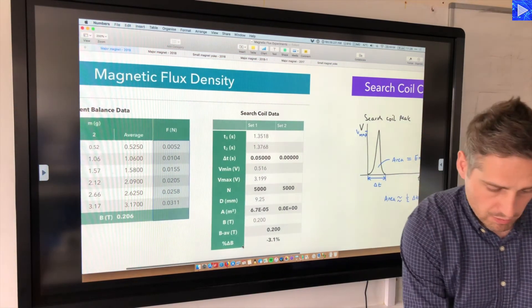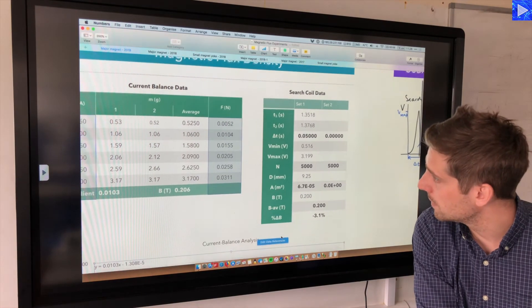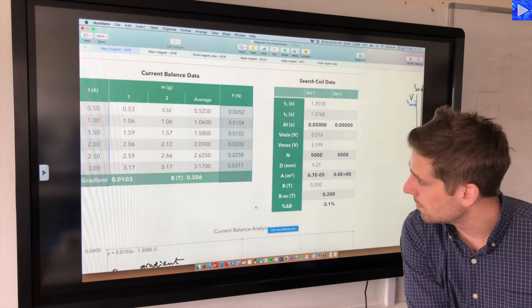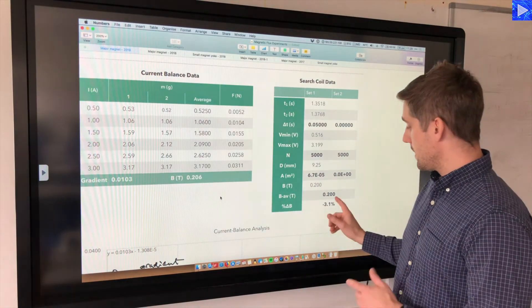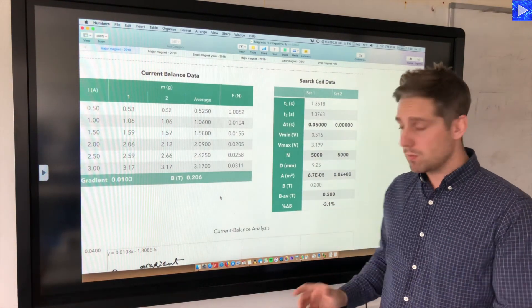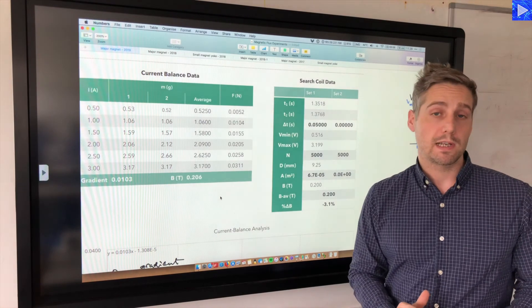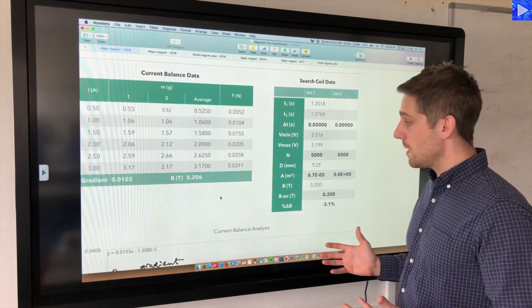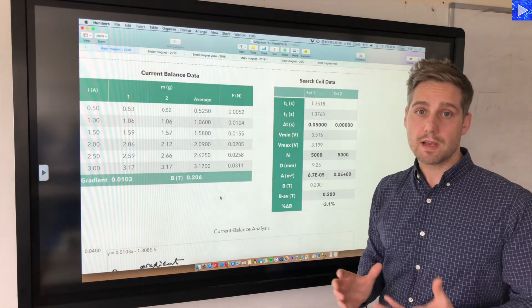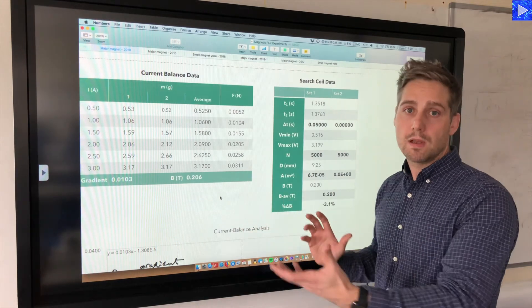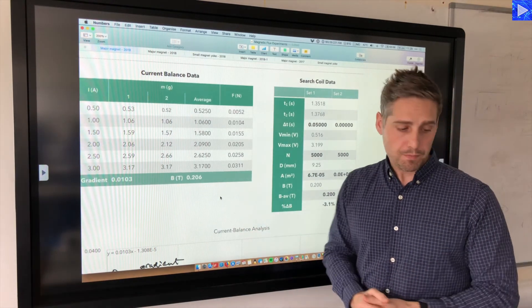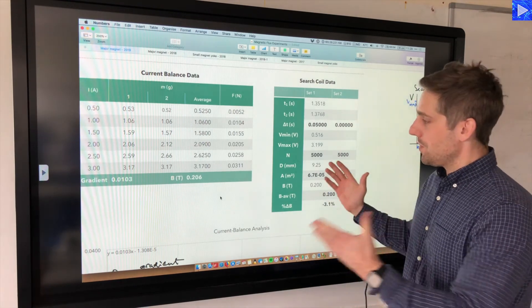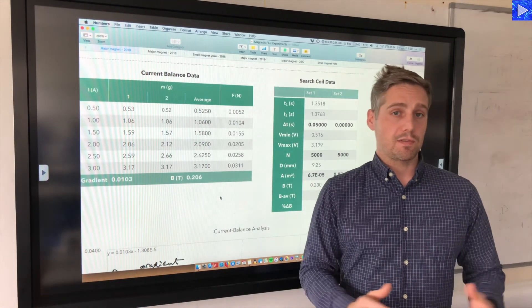And this is a percentage difference calculation. So this is comparing my 200 millitesla result with what I got over on the current balance. We can have a look at that. So on my current balance I got 206 millitesla. So that's comparing very well. We get a 3.1% percentage difference. That's really close, so that actually gives me a lot of confidence in both of these experiments.